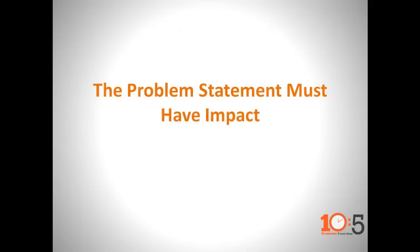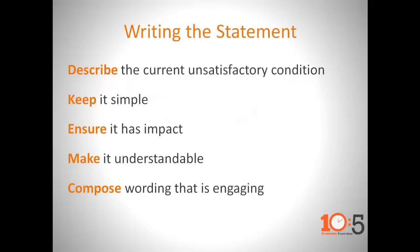Before the problem statement can be written, you must first identify and prioritize the problems in front of you. The written statement must have impact — the statement itself needs to get everyone's attention. There are four levels we see within organizations: system level problems, value stream level problems, process level problems, or task level problems.